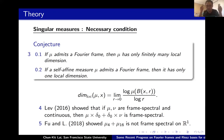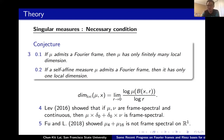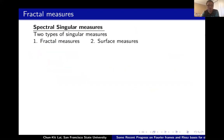The middle-third Cantor measure is uniform — all local dimensions equal log 2 / log 3 — but we still don't know if it has a Fourier frame. So we ask: do we have any positive results about spectral or frame spectral singular measures? Two types of measures have been studied: fractal-type measures and surface measures.